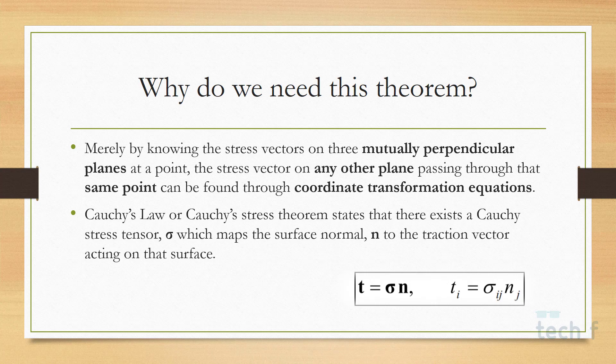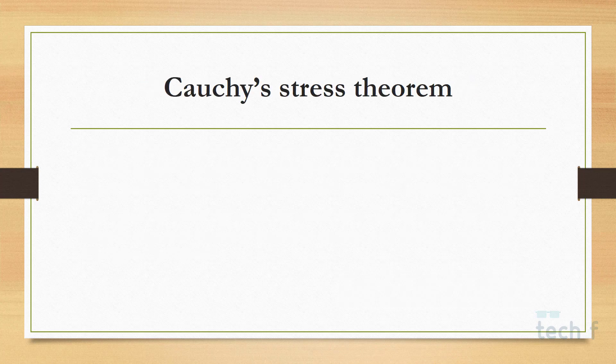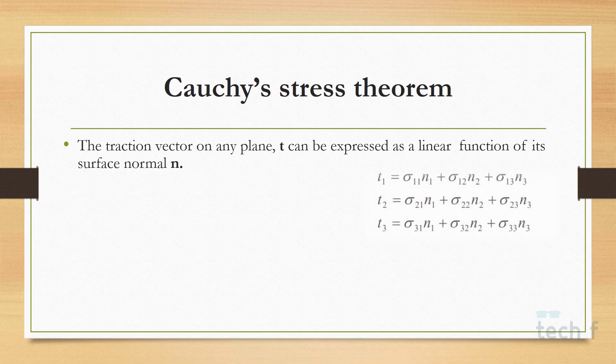Cauchy's law or Cauchy stress theorem states that there exists a Cauchy stress tensor σ, which is a second-order tensor that maps the surface normal n to the traction vector acting on the surface. So traction has linear dependency on the normal vector n.